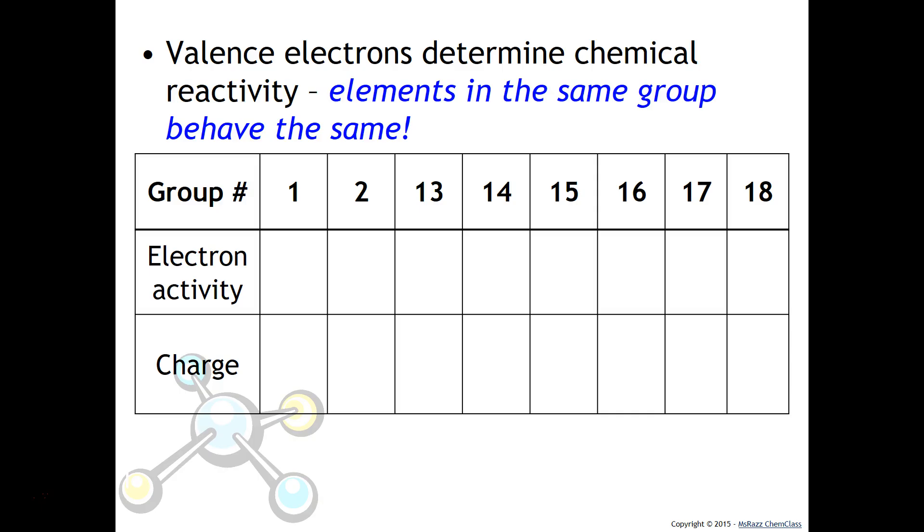For example, the elements in group 1 would lose one electron. The elements in group 2 would lose two. The elements in group 13 would lose three. Group 14 is a little tough because they're actually right smack dab in the middle of the periodic table, and so they can lose or gain four. Group 15 will gain three. Group 16 will gain two. Group 17 will gain one. And I have a smiley face for group 18 because they're already satisfied because they have a full valence shell.